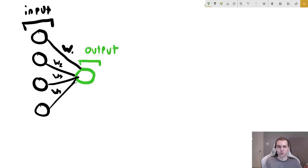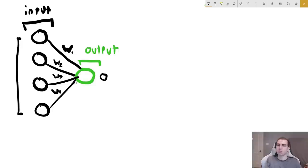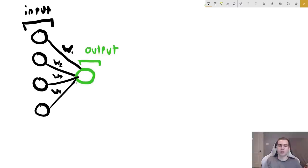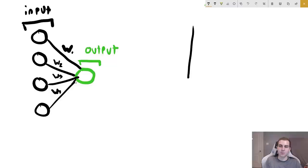Given some kind of input, we want to do something with it and get some kind of output. In this case we have four inputs and one output, but we could have four inputs and twenty-five outputs — it really depends on the problem we're solving. I'm going to show you how a neural network would work to train a very basic snake game.